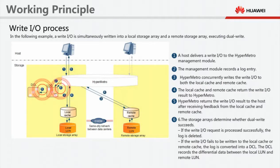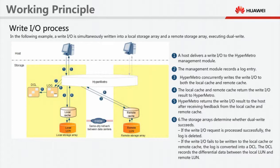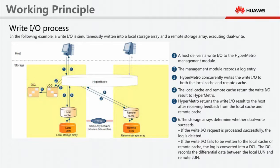Step 6: The storage arrays determine whether dual write succeeds. If the write IO request is processed successfully, the log entry is deleted. If the write IO fails to write to the local or remote cache, HyperMetro services are suspended and the storage array in each data center sends an arbitration request to the quorum server. The storage array that wins the arbitration continues providing services, and the storage array that fails in the arbitration stops providing services.